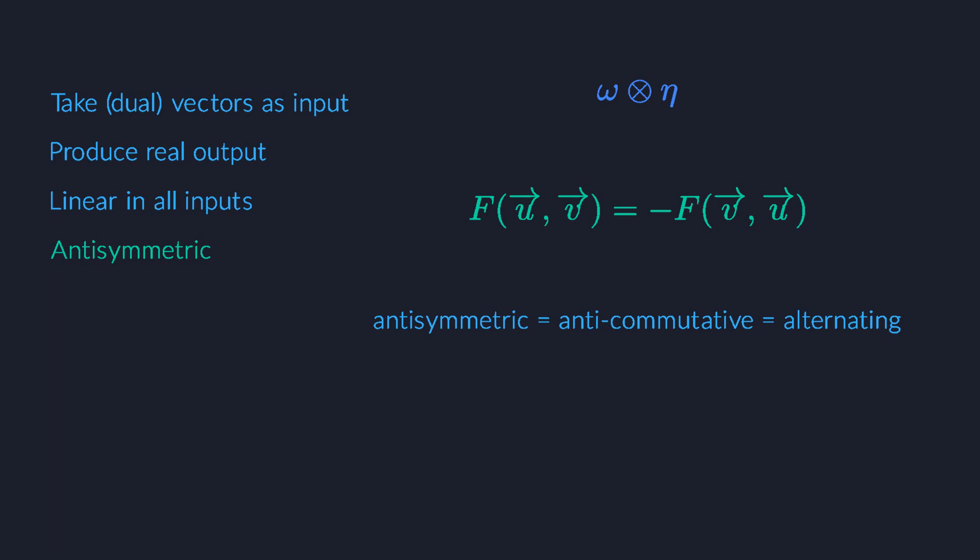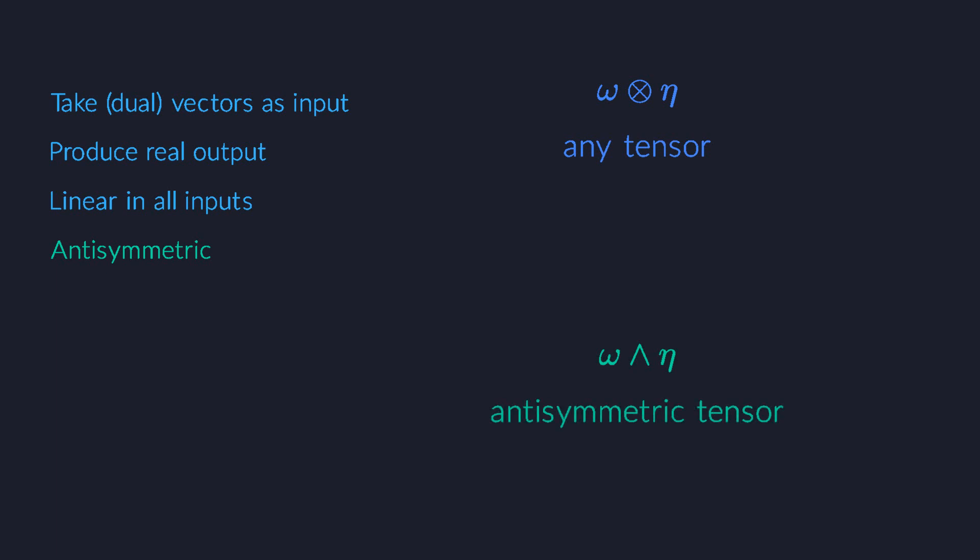Synonyms for anti-symmetric are anti-commutative and alternating. When we take two one-forms and we glue them together into an anti-symmetric or alternating function, we use this wedge symbol instead of the circled multiplication sign, and we call the operation the wedge product. It's important to keep the difference in mind between the tensor product, which produces a multilinear function without any further restrictions, and the wedge product, which always and only produces anti-symmetric multilinear functions.